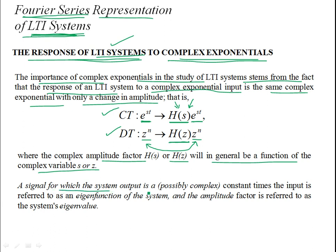A signal for which the system output is a complex constant times the input is referred to as the eigenfunction of the system. For example, e^(st) and z^n are the eigenfunctions of the system because, when applied to an LTI system, the output is the same as the input — e^(st) or z^n in continuous or discrete time domains. Those inputs are called the eigenfunctions of the system.